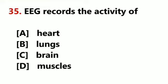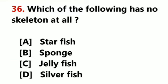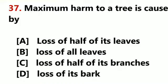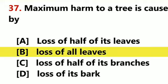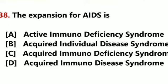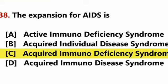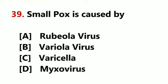EEG records the activity of the brain. Which of the following has no skeleton at all? Silverfish. Maximum harm to a tree is caused by loss of all leaves. The expansion for AIDS is Acquired Immunodeficiency Syndrome. Smallpox is caused by Variola virus.